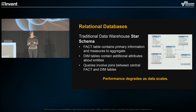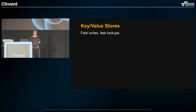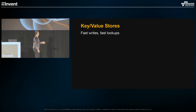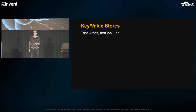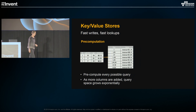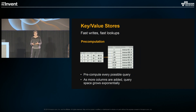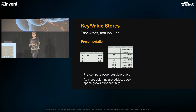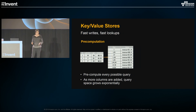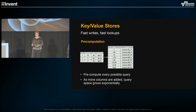This works for a smallish data set, but as the data scales, your performance tends to degrade. Key-value stores have been popular in the last few years — the great thing about them is that you have fast writes and fast lookups. There are two common patterns with key-value stores. First, precomputation, where every expected query is precomputed. The problem with this is that ad hoc queries are not supported to start with, and as you add more columns, the query space grows exponentially and performance falls off.